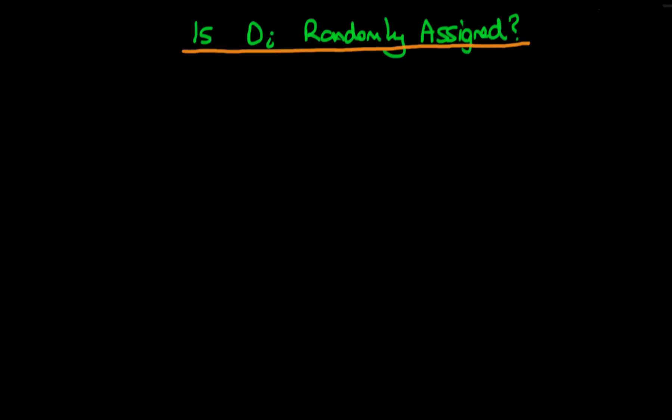In this video we're going to talk about how we could determine if a particular treatment was randomly assigned given that we're not dealing in experimental conditions. We're going to continue using the example we've already used: is there an effect of infrastructure spending to lower the level of violence within a conflict area? Let's say we didn't know whether states were randomly assigned or whether they were assigned with some pre-existing criteria to receive infrastructure spending. How might we determine if the level of infrastructure spending a state received was in fact randomly assigned?